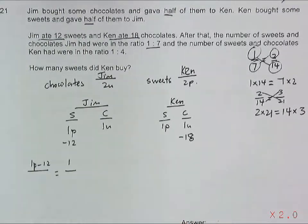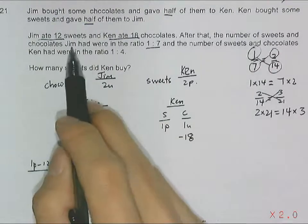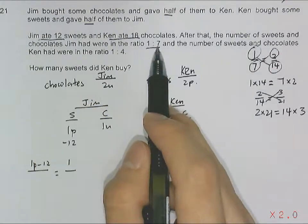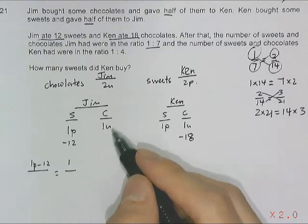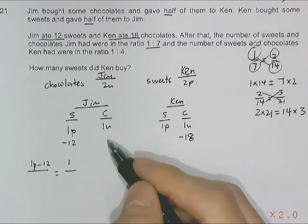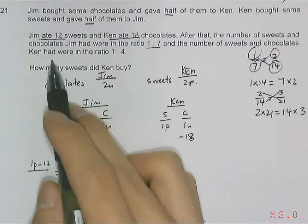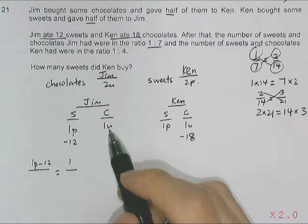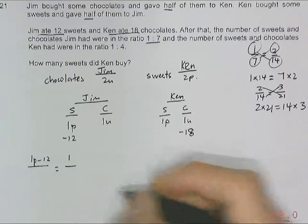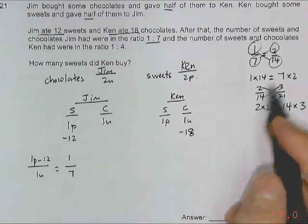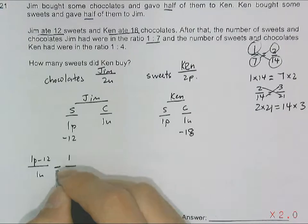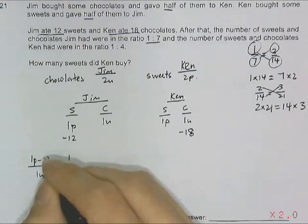This becomes the 1 out of 7. The other side is the chocolates, which gives us the 7 here, 7 portions. The number of chocolates has not changed at all, so it will still remain as 1 unit. The number of chocolates that Jim had remains as 1 unit over 7. Since they are equivalent, you can cross multiply.